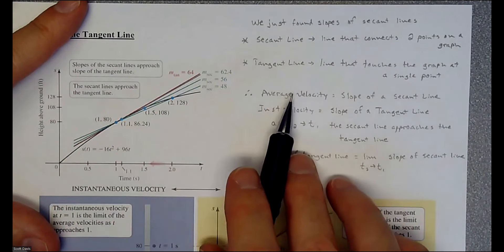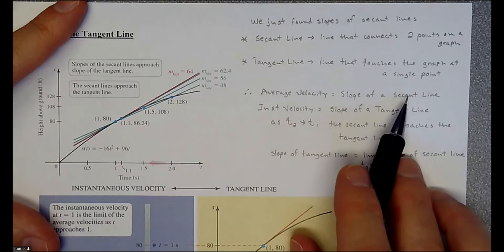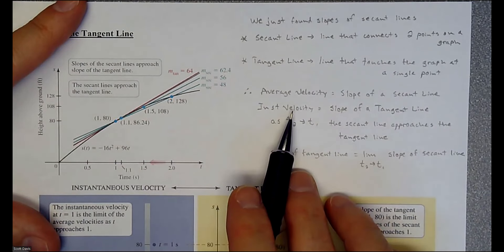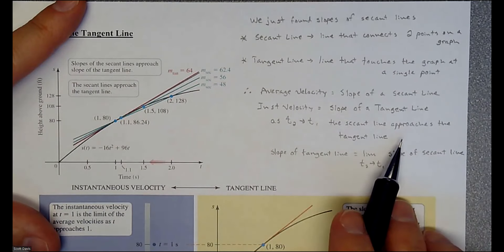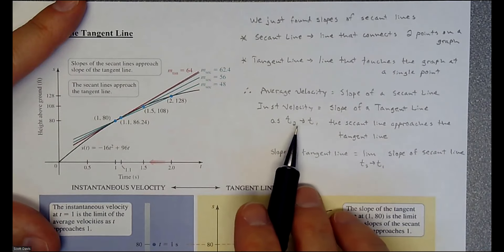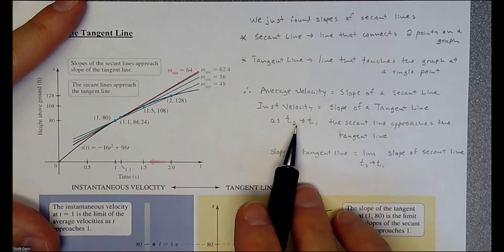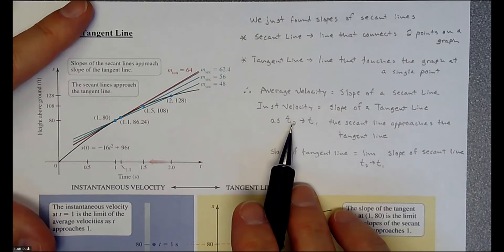So to do that is our average velocity is a slope of a secant and our instantaneous velocity is the slope of the tangent. To do it is we are going to make it a limit. So we are going to squeeze the difference between them, locking one of the values and squeezing the other value closer and closer and closer to it.